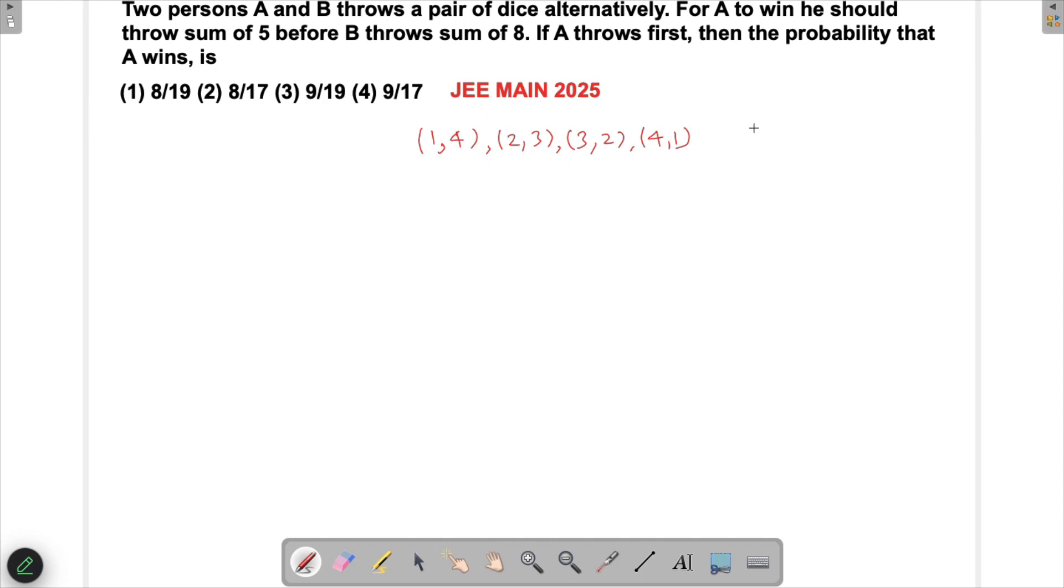There are 36 total possibilities when throwing a pair of dice, so his probability of success P(A) is 4/36 = 1/9. His probability of failure is 1 - 1/9 = 8/9.